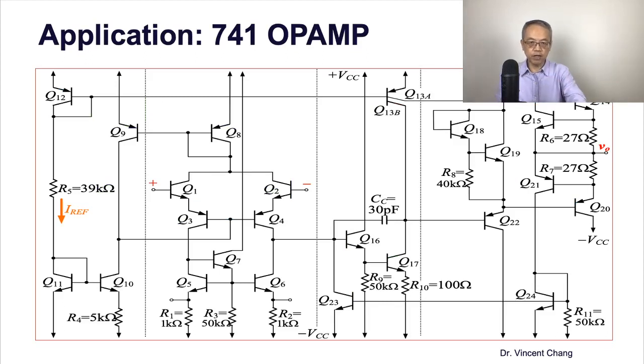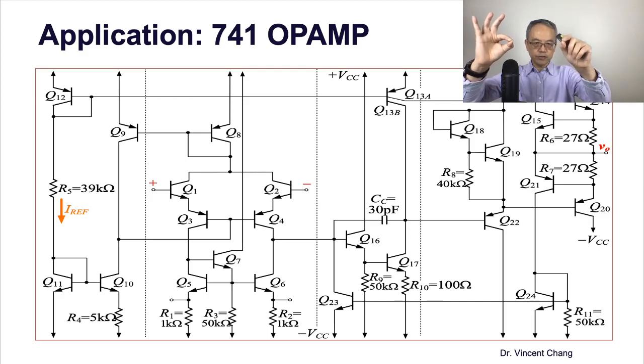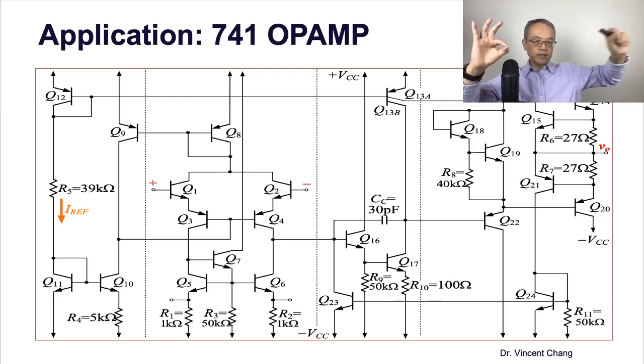Let me show you one of the application of this circuit in analog integrated circuit. Bipolar, here's the bipolar 741 operational amplifier. Differential in, the base of Q1 and the base of Q2. And single ended output on the right. Differential in, single ended out.